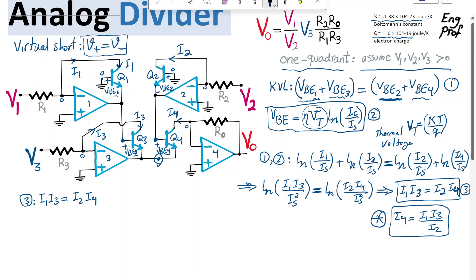what is the value of I1? Well, take a look at this. If you look at the KCL, for the negative terminal of op-amp number 1, we know that the voltage over there is 0 because of virtual short. Now,